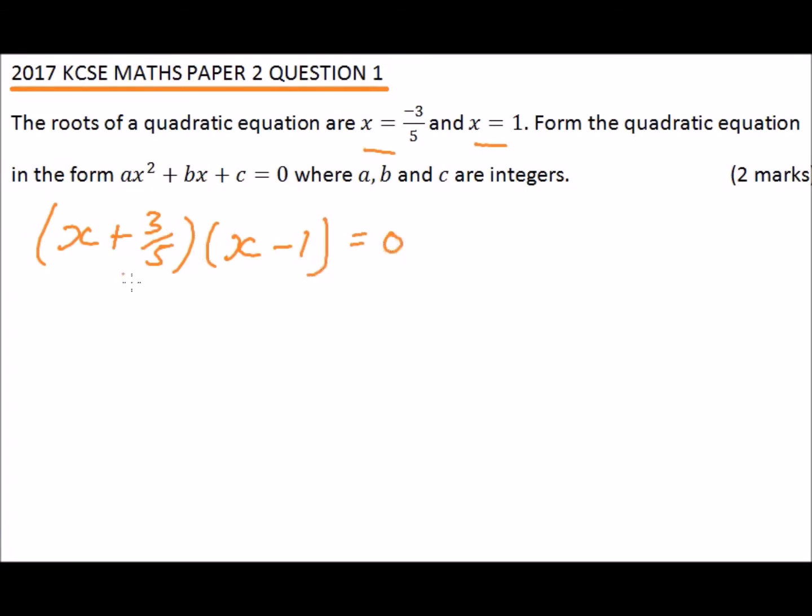This is because we are going the reverse of factorization. If you say x equals plus 3 over 5, it means x will be minus 3 over 5 as the root, and x will be 1.